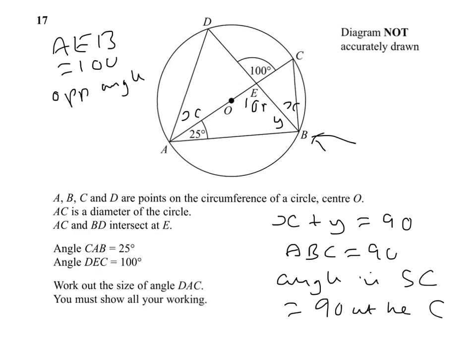So Y is going to equal 180, just angles in a triangle, 180 minus 125. 125 comes from the 100 here and the 25 there. That's going to equal 55. Okay, so that's 55. And that's angles in a triangle make 180.